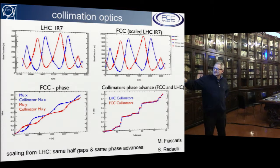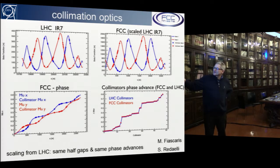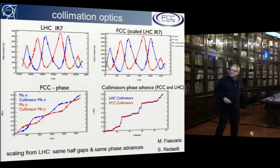Shown here is the LHC optics — about 500 meters long — and the scaled FCC optics, which is 2.7 kilometers long, with perfect agreement in the phase advances at the collimator locations, giving a perfect overlap. This collimation scheme needs to be revised, as it seems a bit strange that we need so much space.